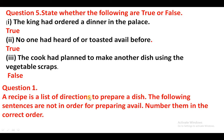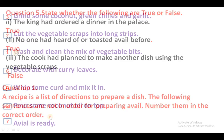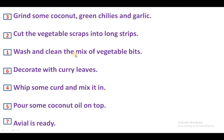A recipe is a list of directions to prepare a dish. The following sentences are not in order for preparing avial — number them in the correct order. Jo neeche jo recipe hai, avial tayar karne ki wo di gayi hai, lekin sentence sahi order mein nahi hai, un sabhi ko sahi number dein. First, wash and clean the mix of vegetable bits.